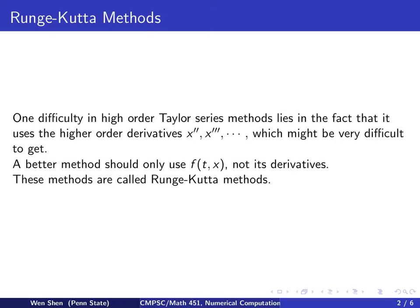We now learn a new type of method called Runge-Kutta Method. We begin by observing that in the Taylor series method, especially in high order Taylor series method, there is a difficulty in the method. The method needs the high order derivatives, like x double prime, x triple prime, which might be very difficult to get.